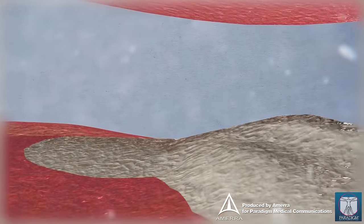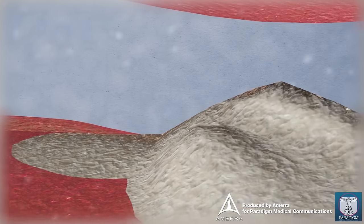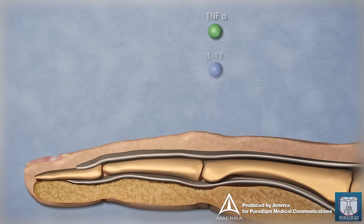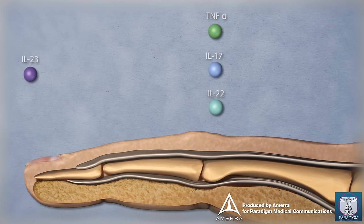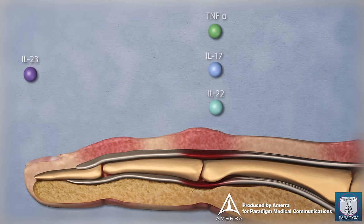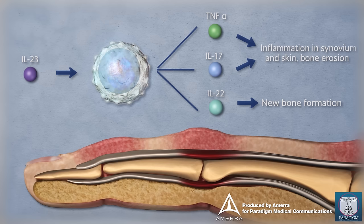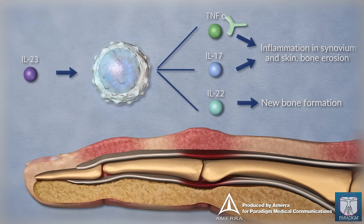IL-22 is also implicated in ankylosis, joint fusion, and entheseal bone formation. Additionally, TNF, IL-17, IL-22, and IL-23 are upregulated in the skin and are active in psoriasis. Agents that target these cytokines inhibit specific points in these inflammatory pathogenic pathways.